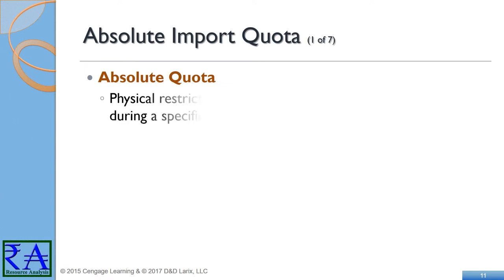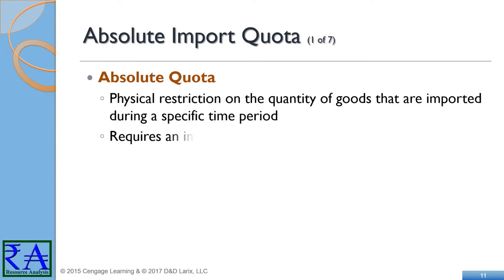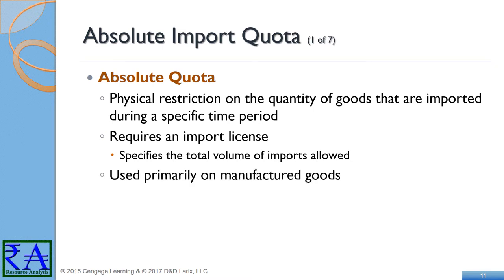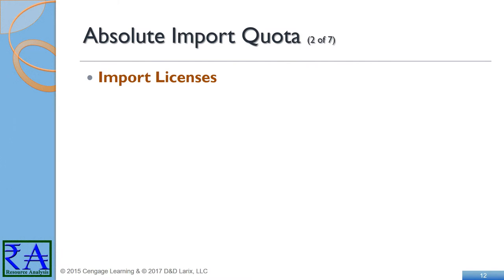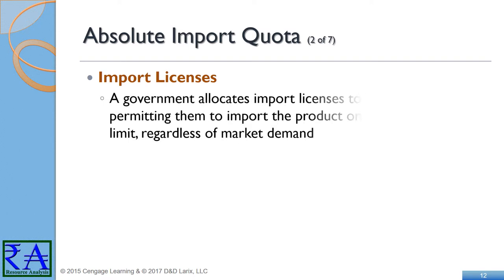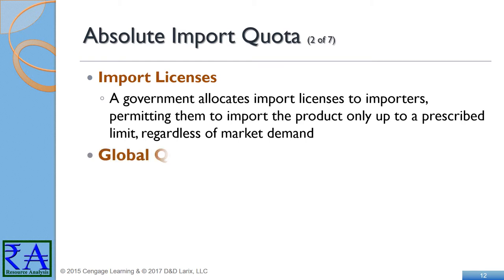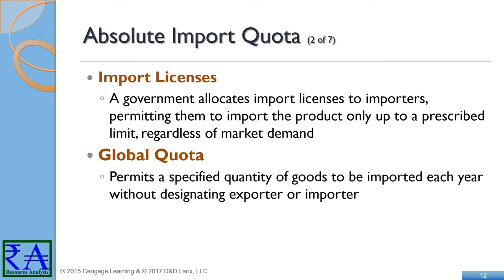An absolute import quota may be described as a quantity limit imposed by a country on the amount of specific goods imported during a period of time, generally within a year. Once the quota is met, no further considerations of domestic market demands are made. The quota limit is set, met, and not contemplated further — at least not until the next quota limit is set. To manage the absolute quota system, a government will issue import licenses to named and authorized domestic importers for specific allocation of imported goods. A global quota expands the absolute quota system slightly by setting a maximum amount of specific goods available for import, but it does not specify who can import the goods or where they will come from — literally a first-in-time, first-in-line import arrangement.